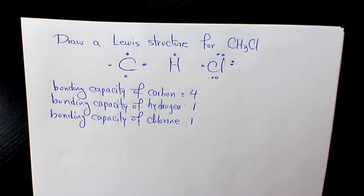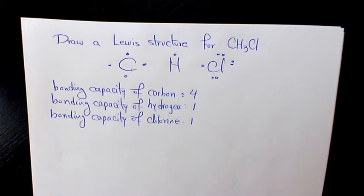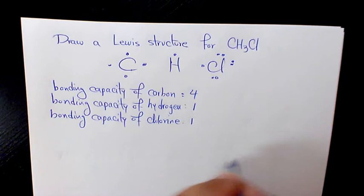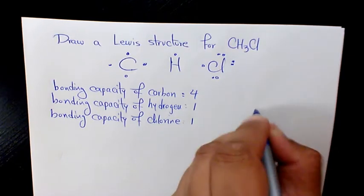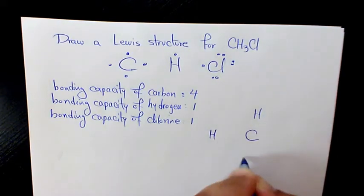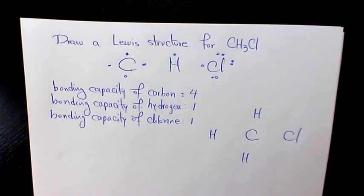Carbon is going to be the central atom. The first thing we need to do for drawing a Lewis structure is to identify the central atom, and the central atom is usually the element with the highest bonding capacity. So we write the symbol for the central atom and arrange the other atoms around it: C, H, H, H, Cl.